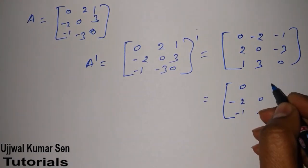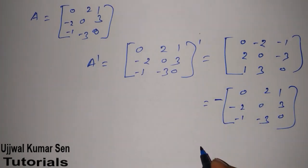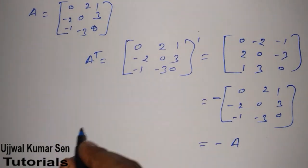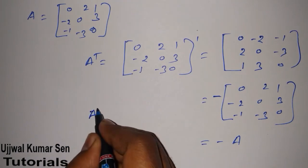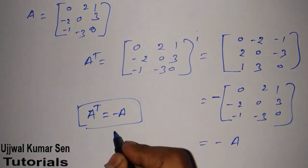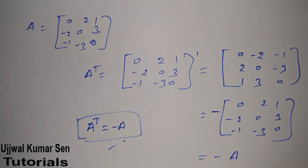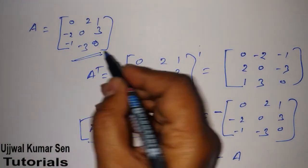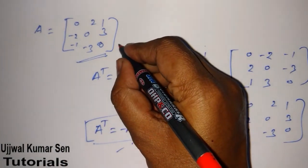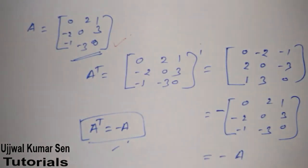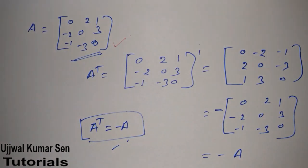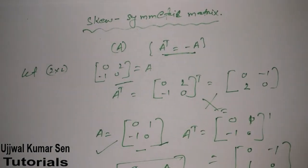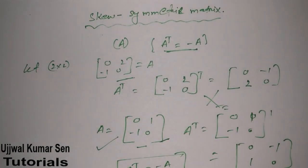Taking the minus sign outside gives us [0, -2, -1; 2, 0, -3; 1, 3, 0], which equals minus A. So we can say the transpose of A is equal to minus A — that means the rule is valid for this matrix also. This matrix is also a skew symmetric matrix. I hope you understand the concept of skew symmetric matrix. Thanks for watching, see you soon in my next video, bye bye.